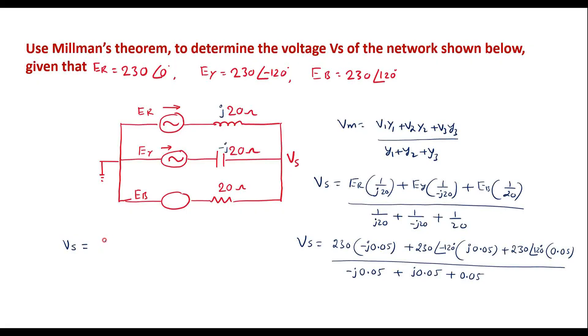Solving this gives Vs = 168.37 at an angle of −60°. This is the required result.